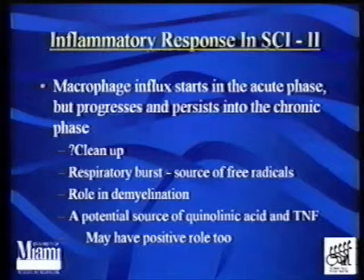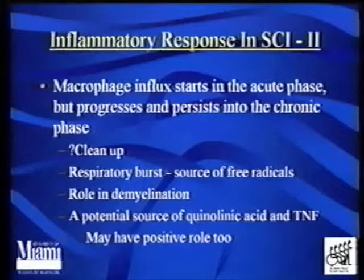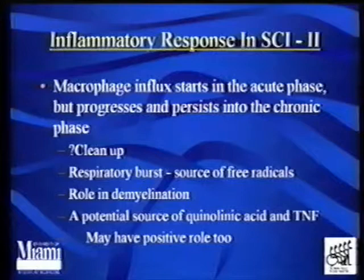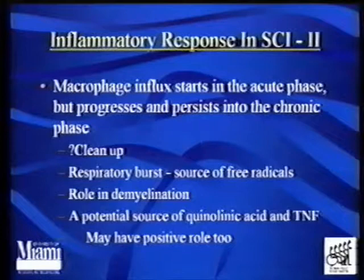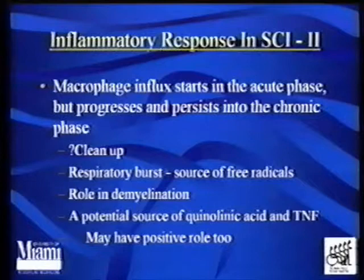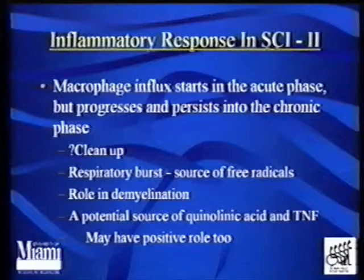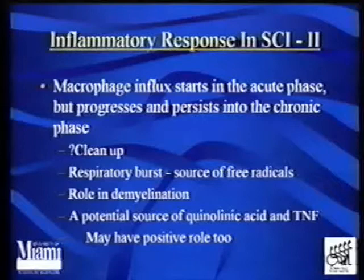The second cell focused on is the macrophage. The macrophage influx starts in the acute phase within the first day but, unlike neutrophils, it progresses and persists into the chronic phase — you can see months or even years out that some macrophages are still hanging around. First thought to be cleaning up the injury, they may be doing more than that. They also have a respiratory burst and serve as a source of free radicals. Andrew Blight showed they're associated with a role in demyelination, which would not be beneficial. They are a source of quinolinic acid and TNF, a cytokine that can have deleterious effects. In contrast, they may have a positive role too — there's been a recent transplant of activated macrophages into a lesion site where some models suggest it promotes regeneration.